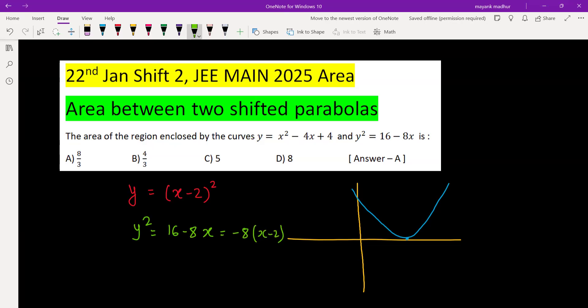So this is left-handed in nature and this is also having same vertex 2 comma 0, but is left-handed in nature. So we need the area between these two parabolas, this area is what we are looking for.